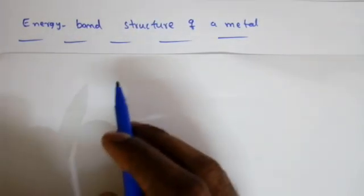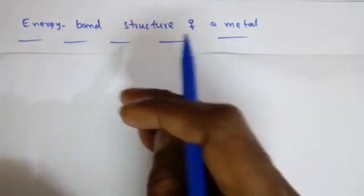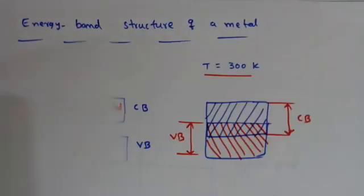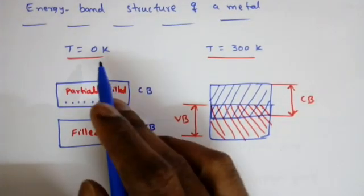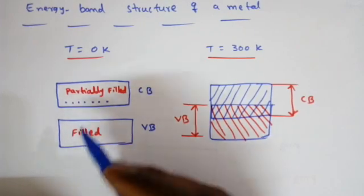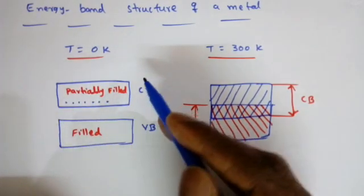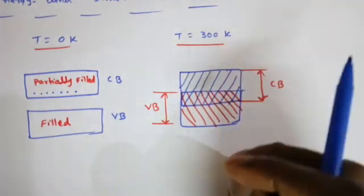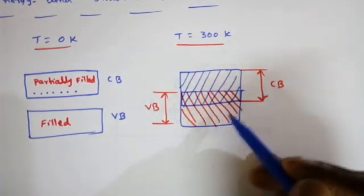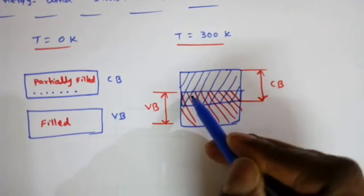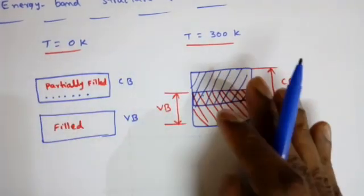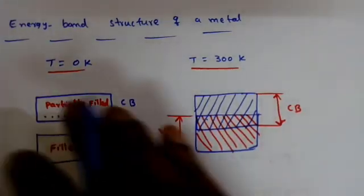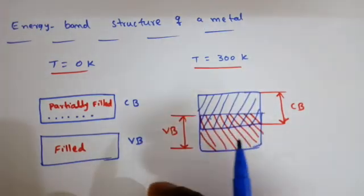Next, for the energy band structure of a metal — the conduction band is partially filled, or sometimes the conduction band and valence band overlap. Even without applying any thermal energy, the conduction band is partially filled, so the moment we apply some electric field, conduction takes place. At T = 300 K, the energy bands overlap with many electrons available in the conduction band and valence band. With so many available electrons, the moment we apply an electric field, conduction takes place.